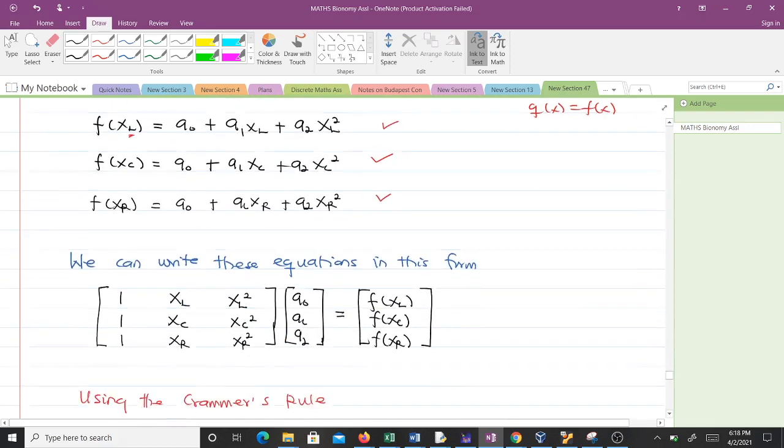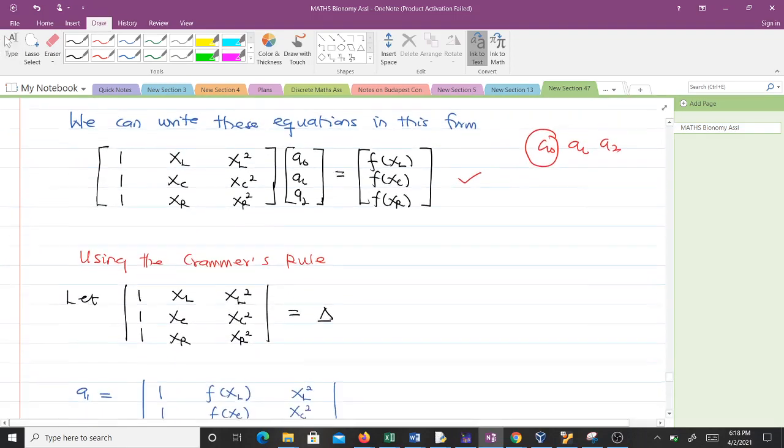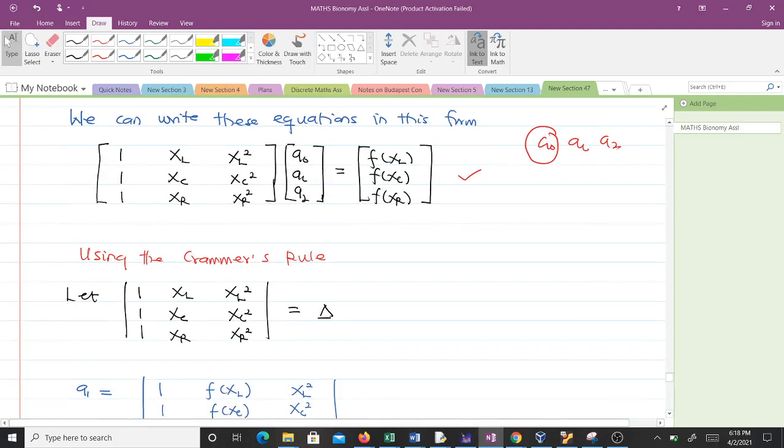After having these equations we can write them in this form. Our unknowns are a₀, a₁, and a₂, but we don't need a₀ because we had x = -a₁/(2a₂). So we have to compute a₁ and a₂. We use Cramer's rule to find a₁ and a₂, first finding the determinant of the coefficient matrix, which we'll denote by Δ.